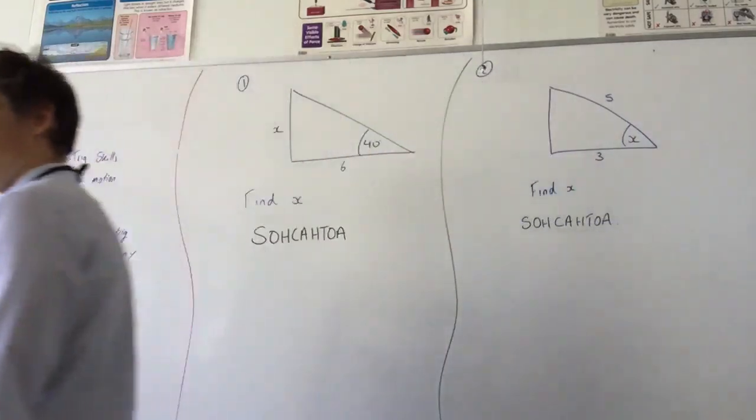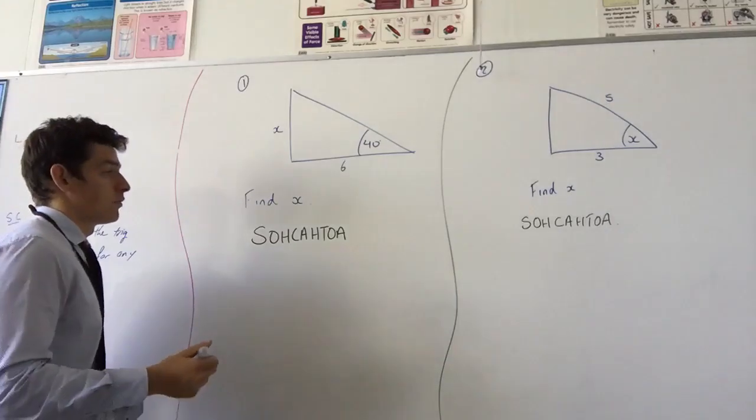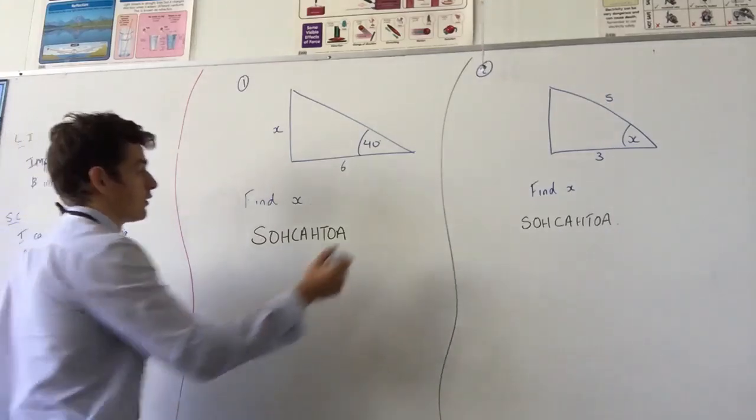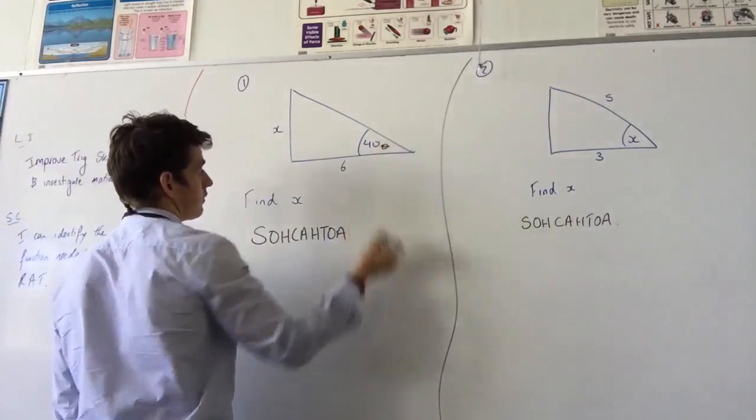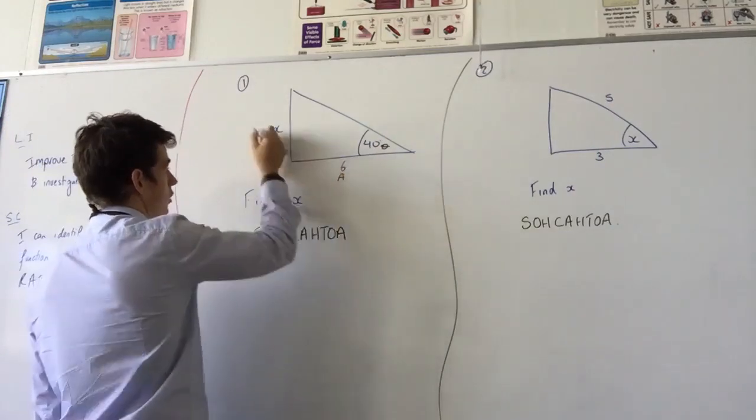So what do you have here? Question one, what have we got? You've got a triangle, and we've got all your variables. So I've got theta, and then you've also got adjacent and opposite.